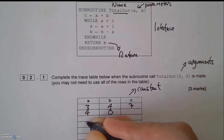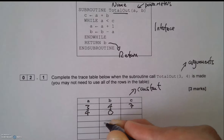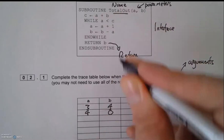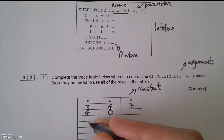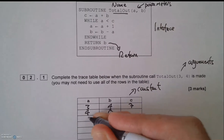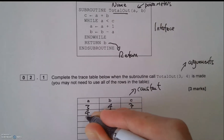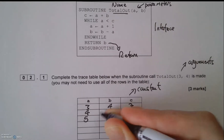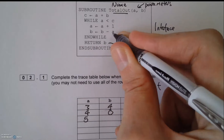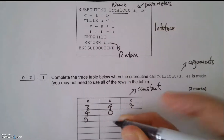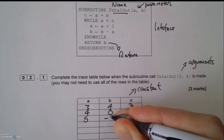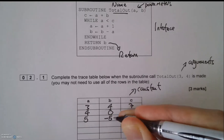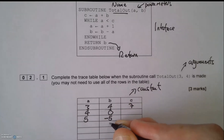Is a less than c? Yes, it still is. So a equals a plus 1, that's now 5. Then b equals b minus a: 0 take away 5 gives me negative 5. That is absolutely correct — that's what it does.